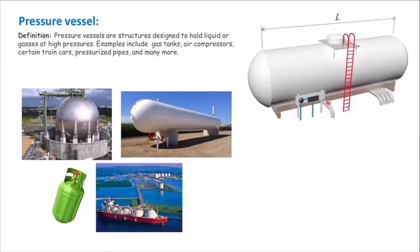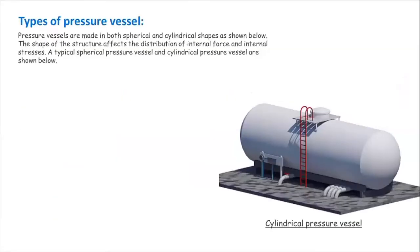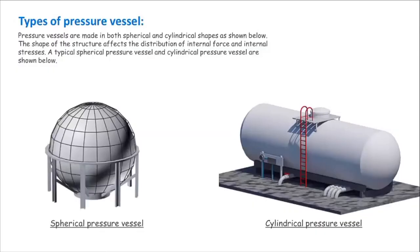Pressure vessels can be categorized based on their geometry into two types: cylindrical pressure vessels and spherical pressure vessels. The shape and geometry affect how stresses are distributed within the structure, so we need to design them separately.